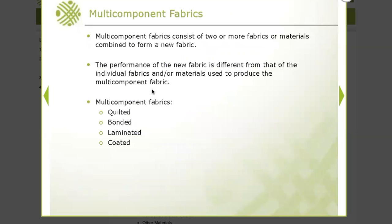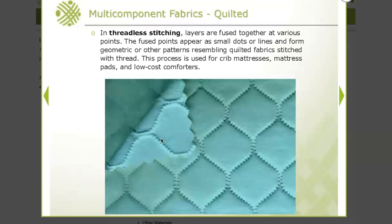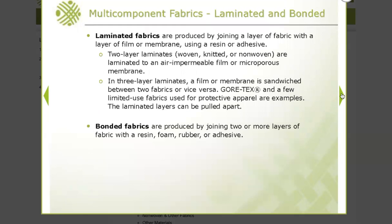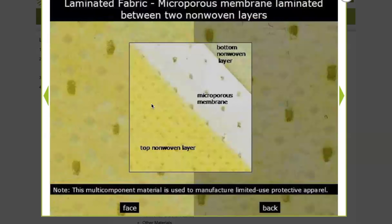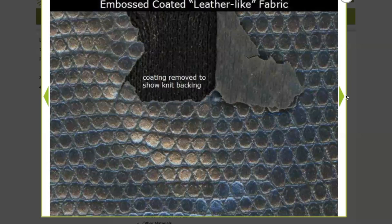We talked about composites or multi-component fabrics — quilted fabrics, bonded fabrics, laminated fabrics, and coated fabrics. This one is quilted using thread; this one uses threadless stitching where heat fused the fabric to create the quilt structure. This coated fabric has a knit backing with a film coating on top that looks like leather — when you peel off the film, you can see the knit structure at the bottom.